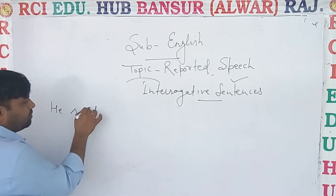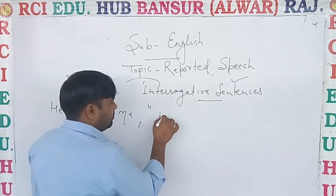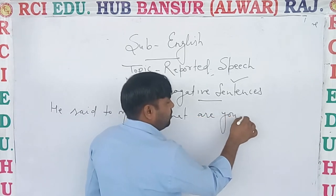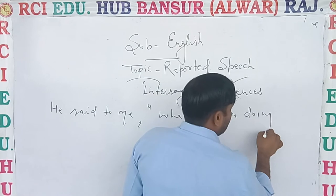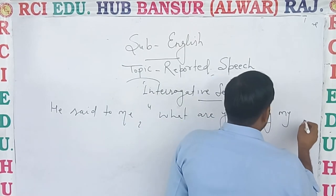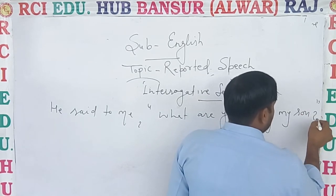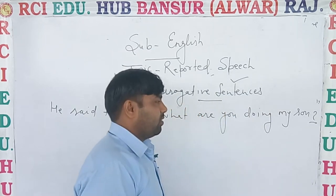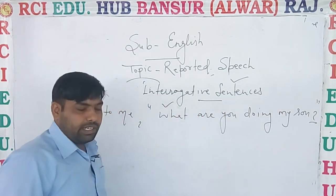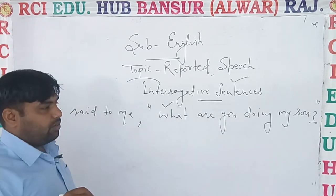I am just giving one example: 'What are you doing?' You can see there is a sign of interrogation, and a WH-word is there. No problem, you can easily understand — it is an interrogative sentence.